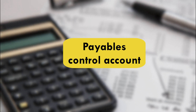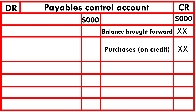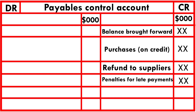Payables is a liability, so the balance brought down should be on the credit side. Anything that increases this balance will also appear on the credit side, including purchases on credit, funds received from suppliers, and penalties for late payments — all appearing on the credit side.